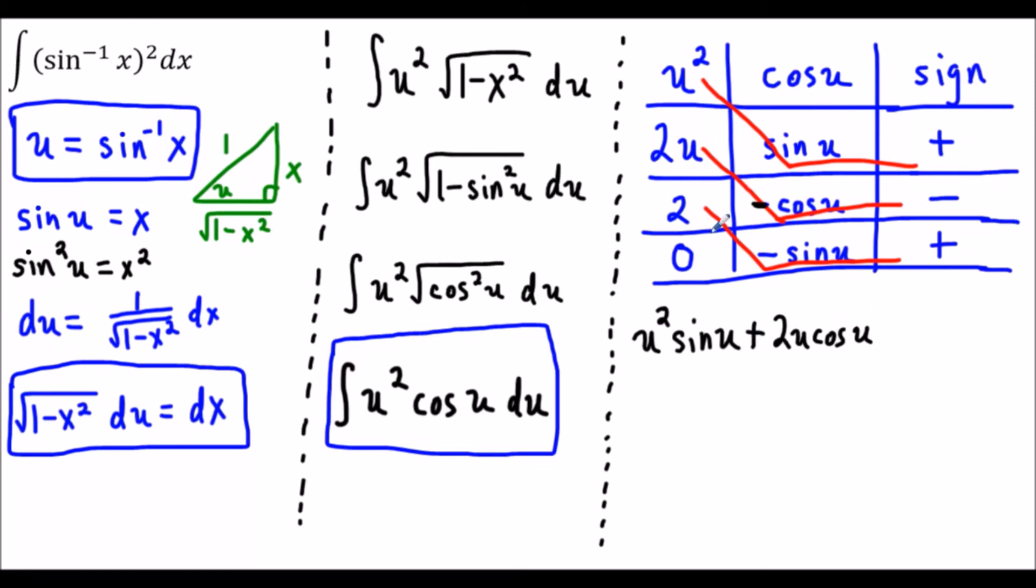Next we're going to have 2 times negative sine u which is negative 2 sine u and the plus tells us to keep this sign. Then we tack on our plus c.